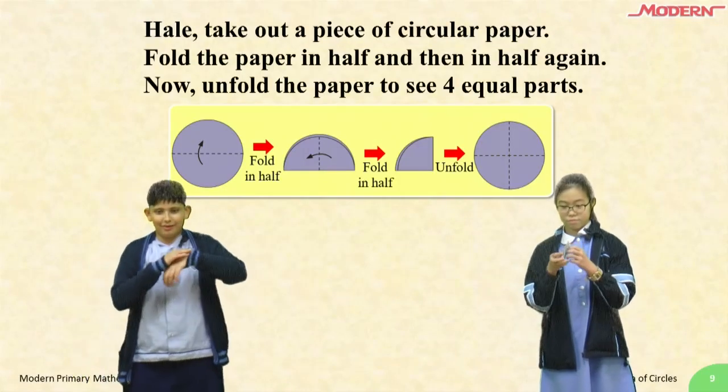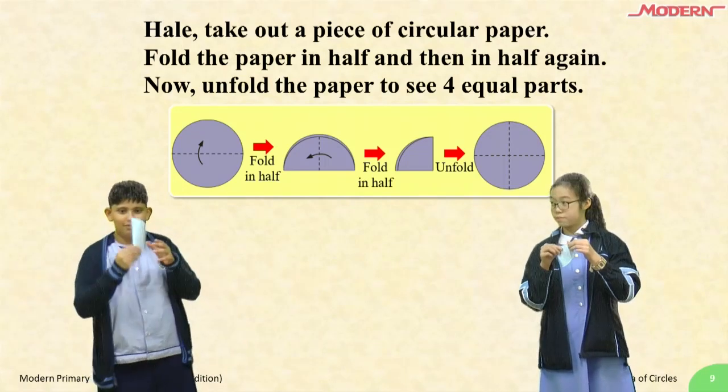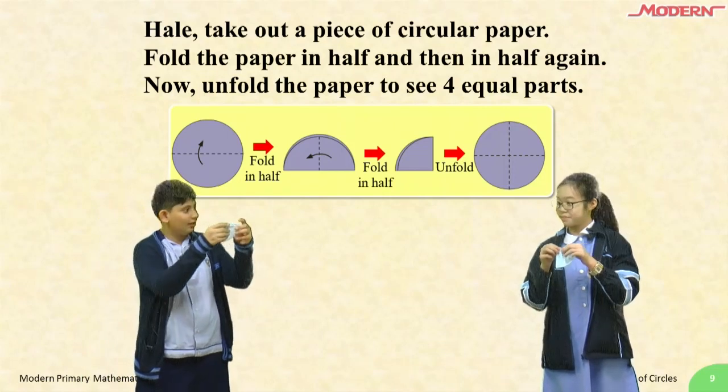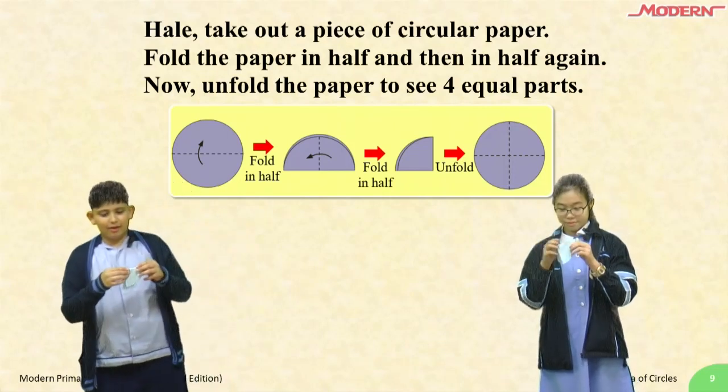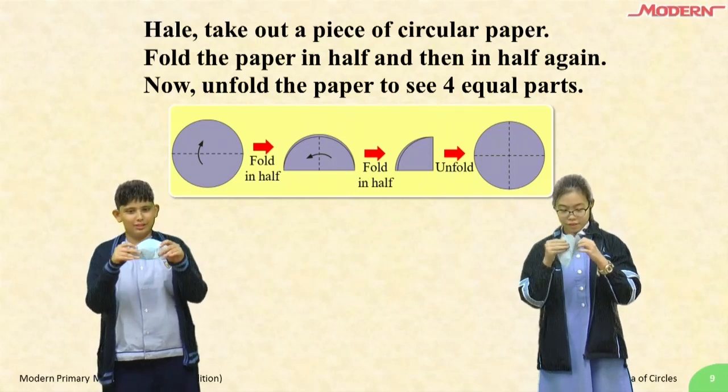Here, take out a piece of circular paper. Fold the paper in half, then in half again. Now, unfold the paper to see 4 equal parts.